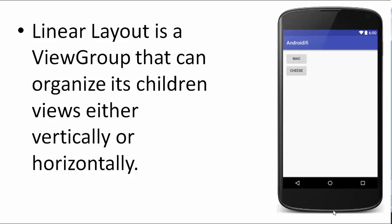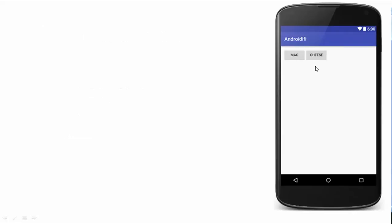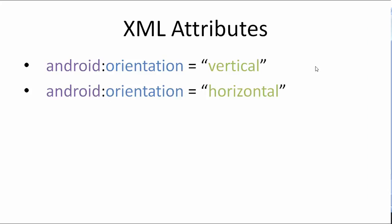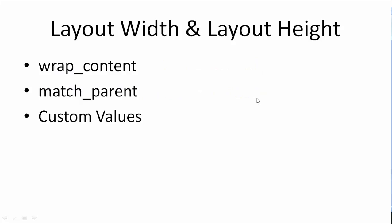Linear layout is a view group that can organize its children views either vertically or horizontally. The children views can either be lined up below each other or next to each other. Here you can see a vertical linear layout where children are stacked below each other, and here is a horizontal linear layout where the children are next to each other. Here are the XML attributes: android:orientation equals vertical, android:orientation equals horizontal, layout_width and layout_height.